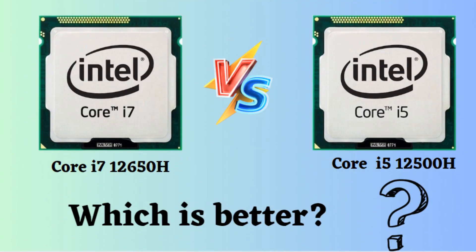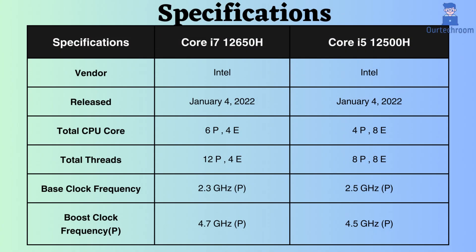In this video, I will compare the Intel Core i7-12650H and Intel Core i5-12500H, highlighting their differences, and then provide a conclusion to help you determine which one is the better choice. Both of these processors are from Intel and come with the same core architecture and clock speeds, but they have slight variations in features. At last, I will provide my suggestions on which processor to choose.